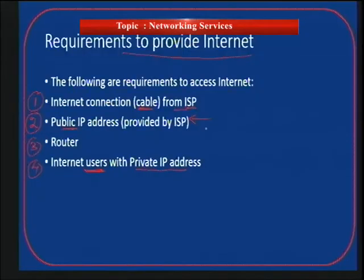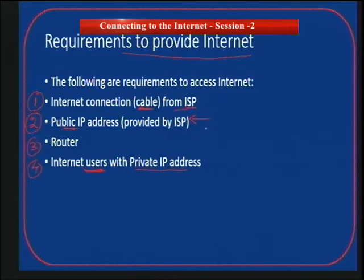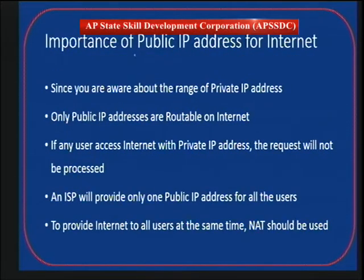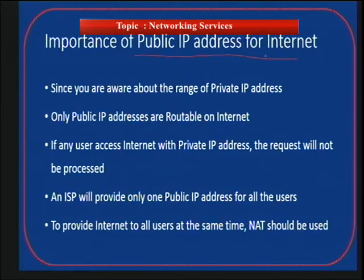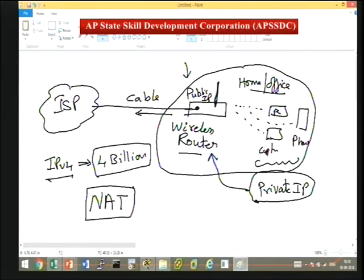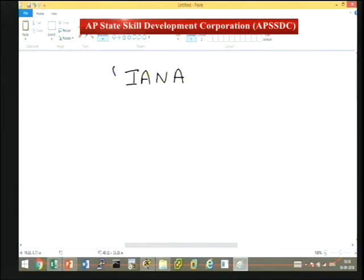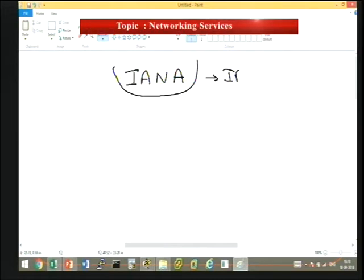The requirements are: an internet connection, the ISP allocates a public IP address, we have a router in our home or office, and the internal users have private IP addresses. Public IP addresses are allocated by a global body called IANA — Internet Assigned Numbers Authority — which manages both IPv4 and IPv6 IP addresses. Other than the reserved private IP address ranges, all other addresses are public IP addresses.